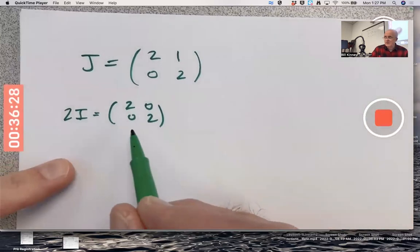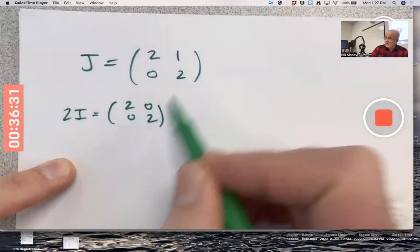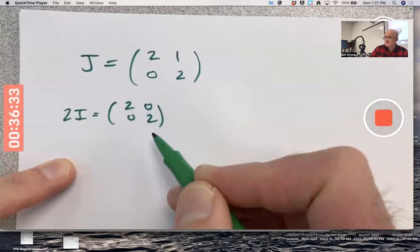So this is only similar to itself so I can't possibly be similar to this, but they would have the same eigenvalues. Two would be a repeated eigenvalue in both cases.